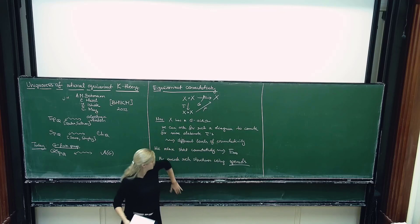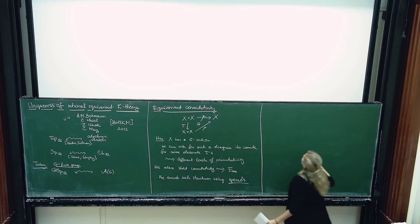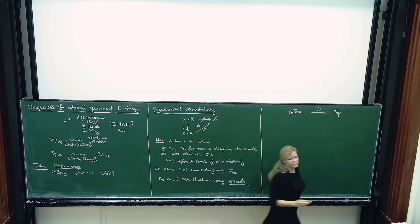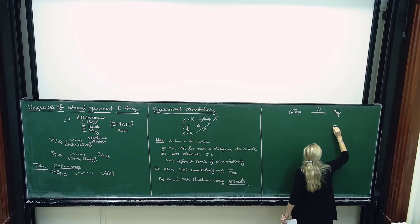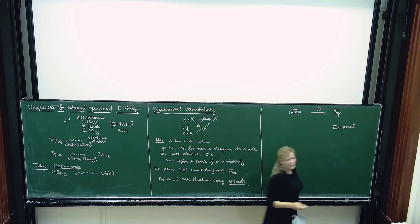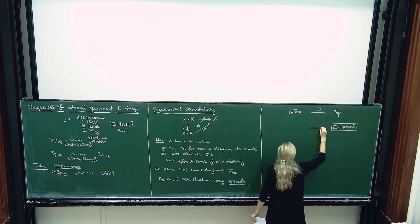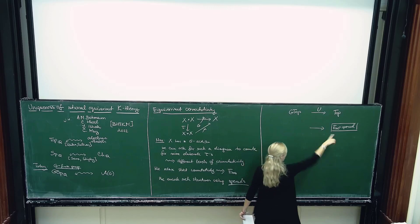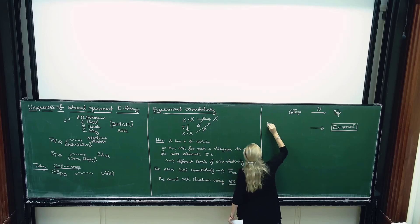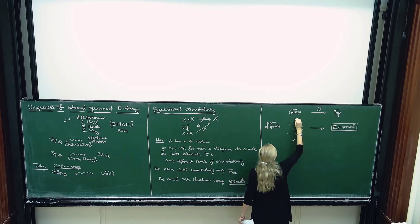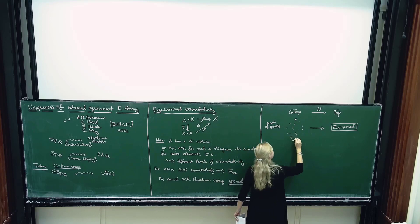Let's have a look at the operads picture. I'm going to look at G-topological spaces and topological spaces under the forgetful functor, forgetting the G-action. In topological spaces I have an E-infinity operad, and any two are going to be weakly equivalent by a zigzag, so I can really talk about the E-infinity operad. Now, if I look at the preimage of all those operads in G-topological spaces that forget down to E-infinity, it turns out I'm going to get a poset of operads.